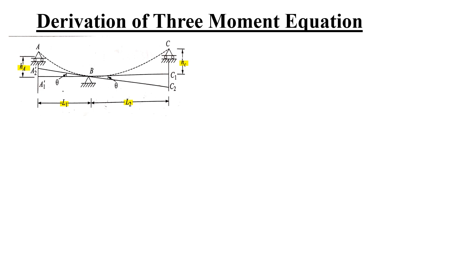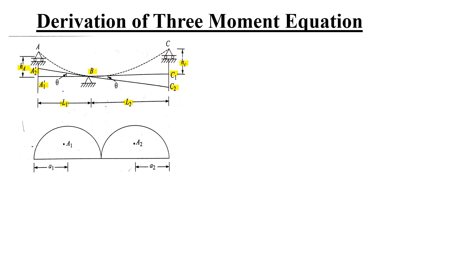Draw a straight line A1-BC1 as a horizontal line through B, and let A2-BC2 be the tangent to the elastic curve at B. So A1-BC1 is the horizontal line through B and A2-BC2 is the tangent through B. Now consider the second figure. Here the free moment diagrams on span AB and BC are given. Free moment diagrams are bending moment diagrams corresponding to the load. Since this beam carries UDL, the free moment diagram will be parabolic.